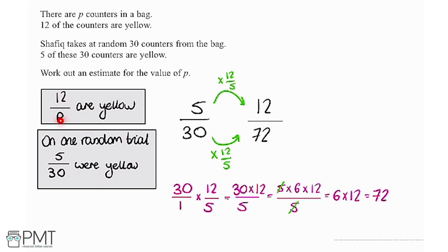Now if we compare this fraction to the original that we've got here, we've got 12 on the top of both. So I can now say that p is 72.